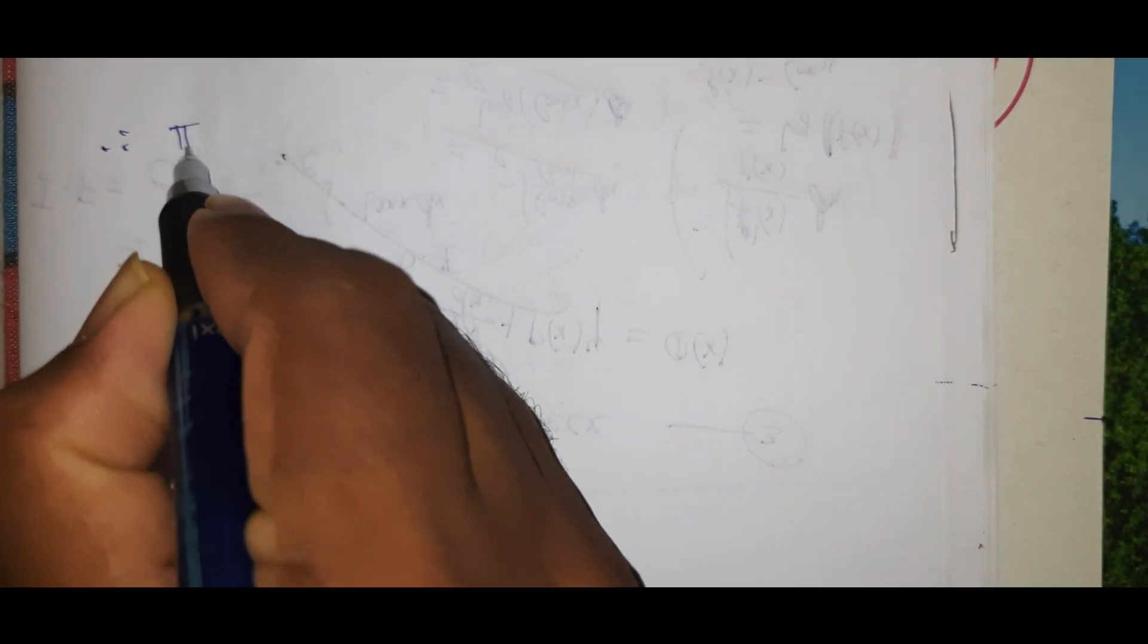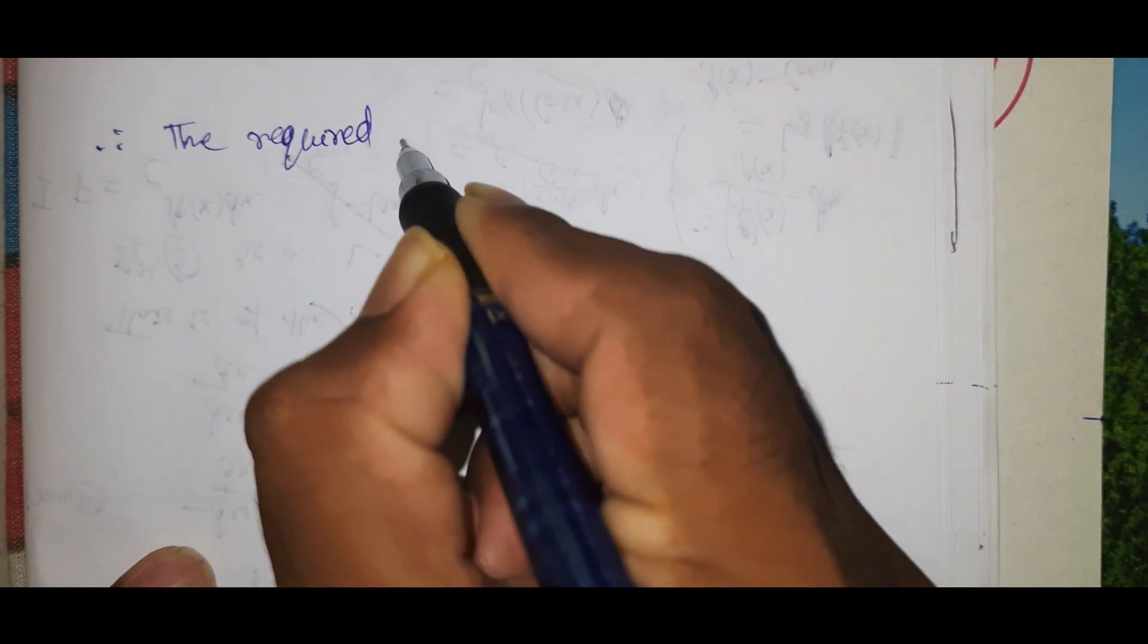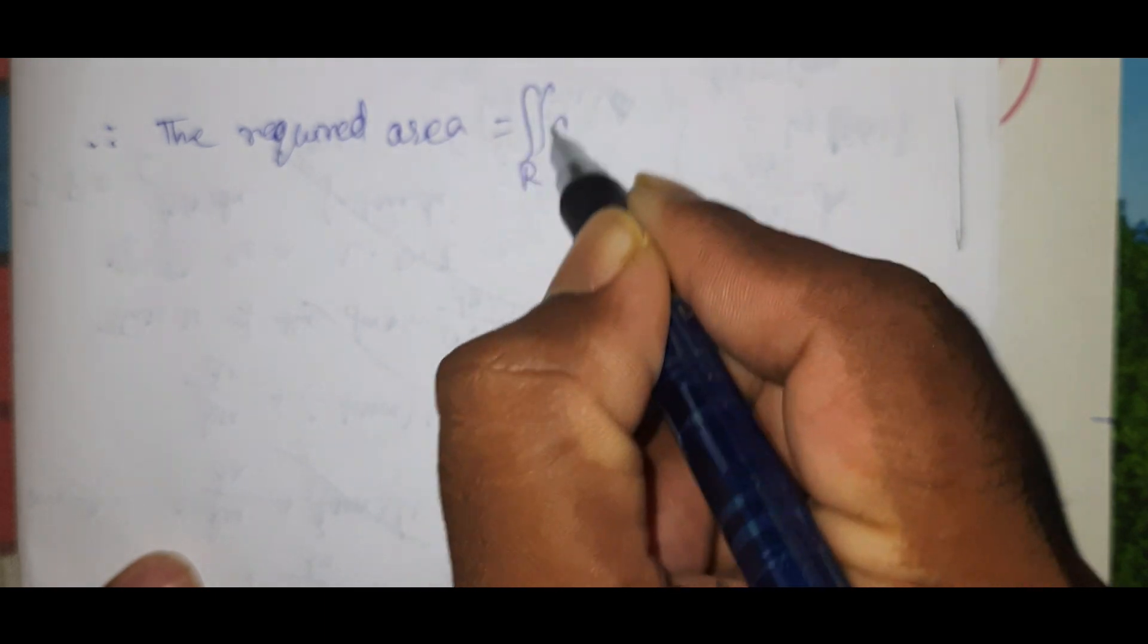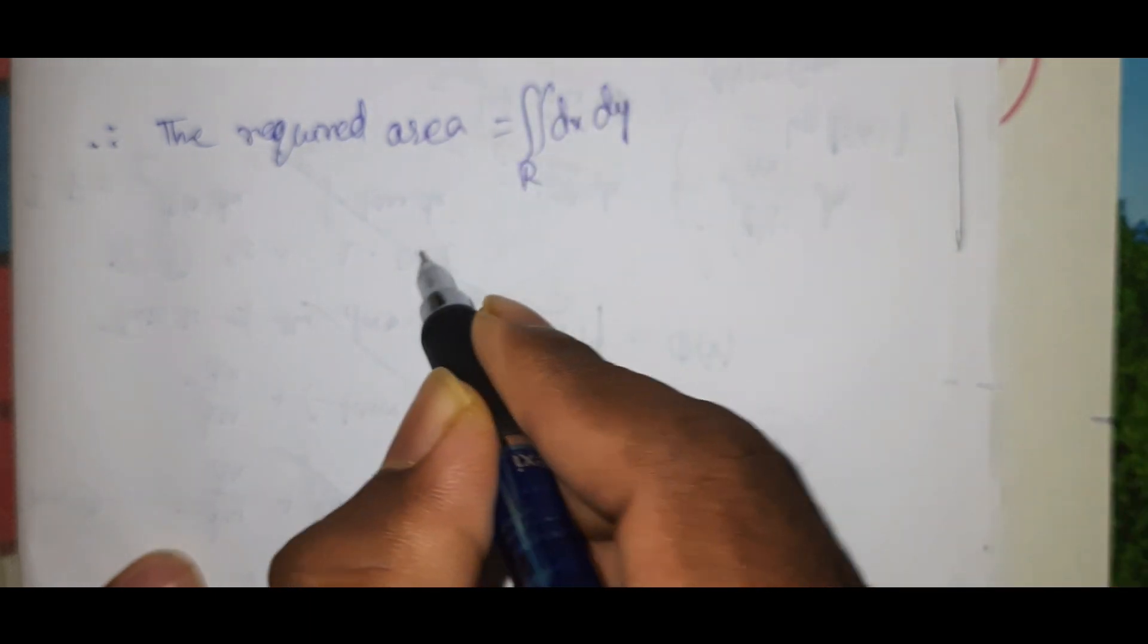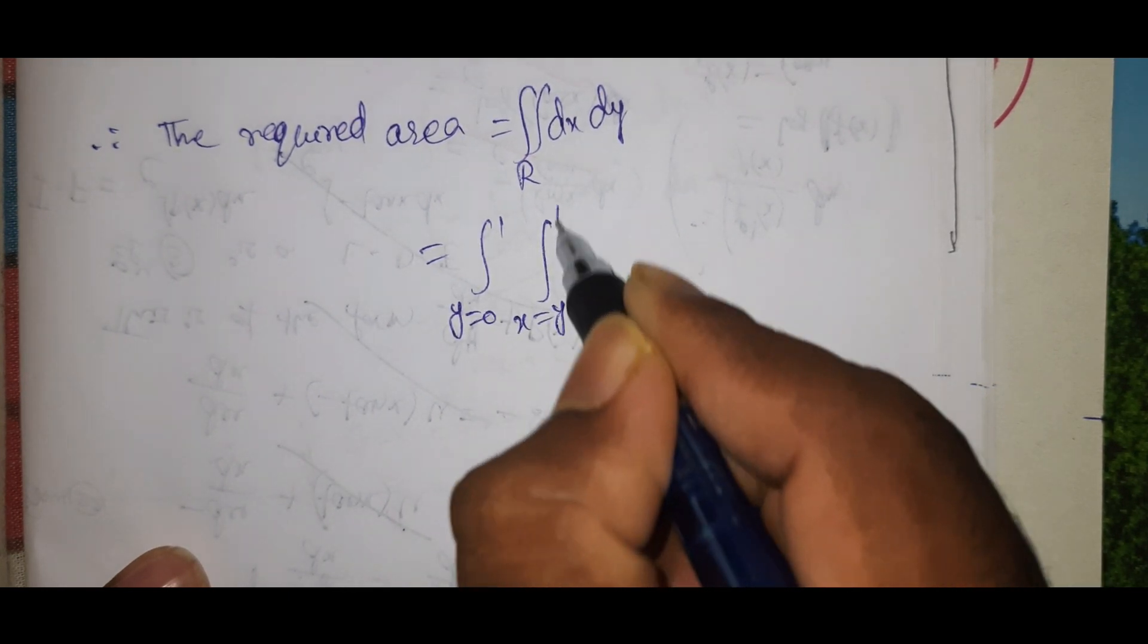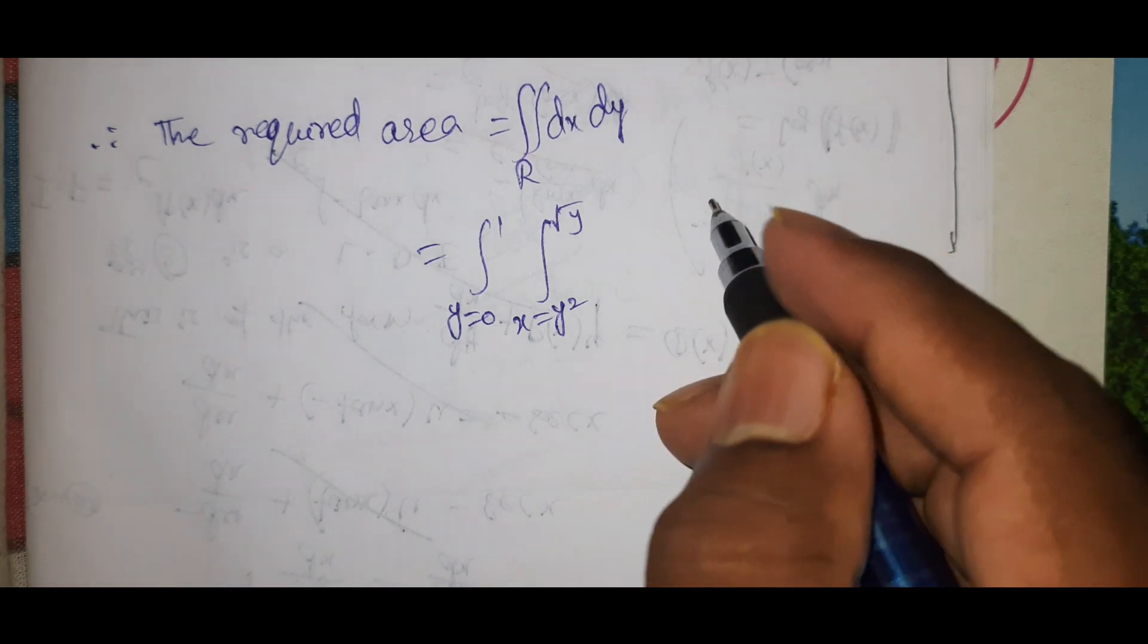Therefore, the required area equals double integral dx dy, which equals integral from y = 0 to 1, x from y² to √y, dx dy.